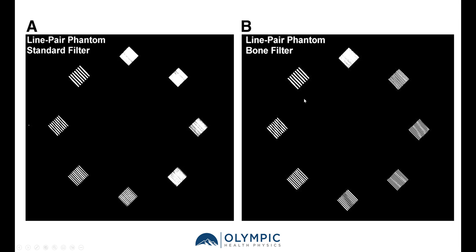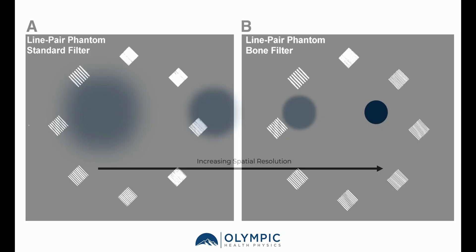Whereas when we apply the bone filter, we can see not only the seven, but we can also see the eight, nine, and ten line pair patterns. So you can see how applying a different filter can change the resolution of the system.